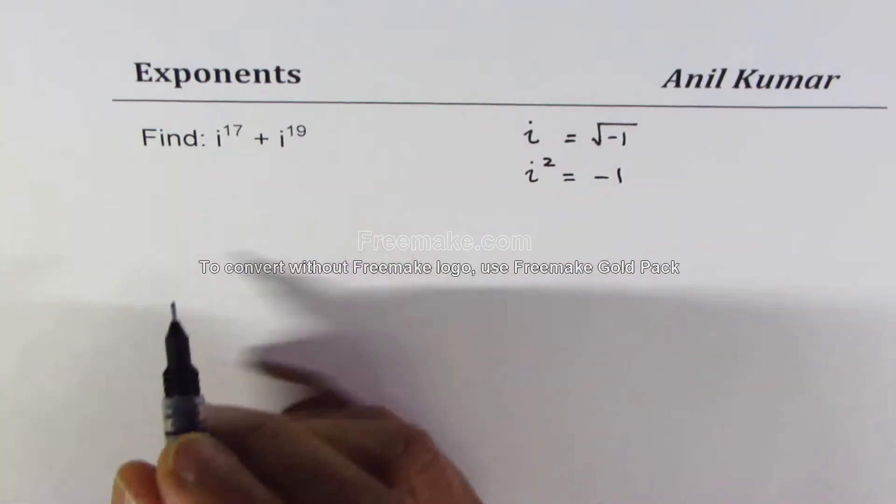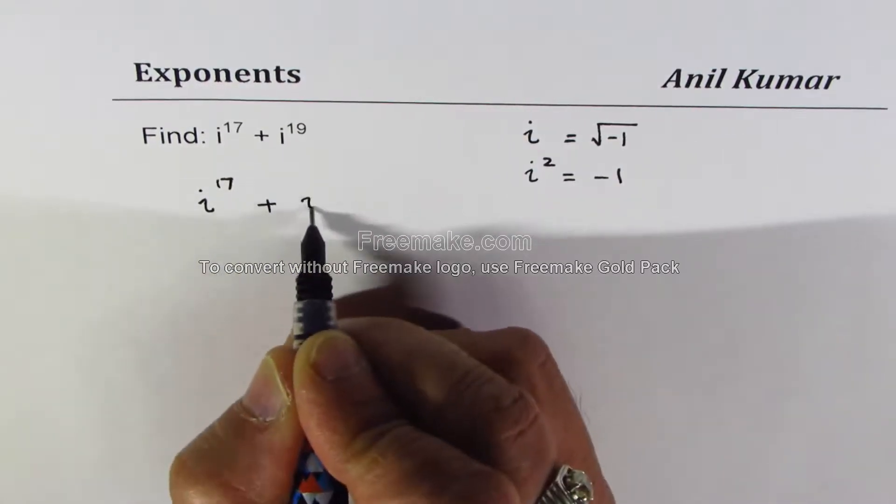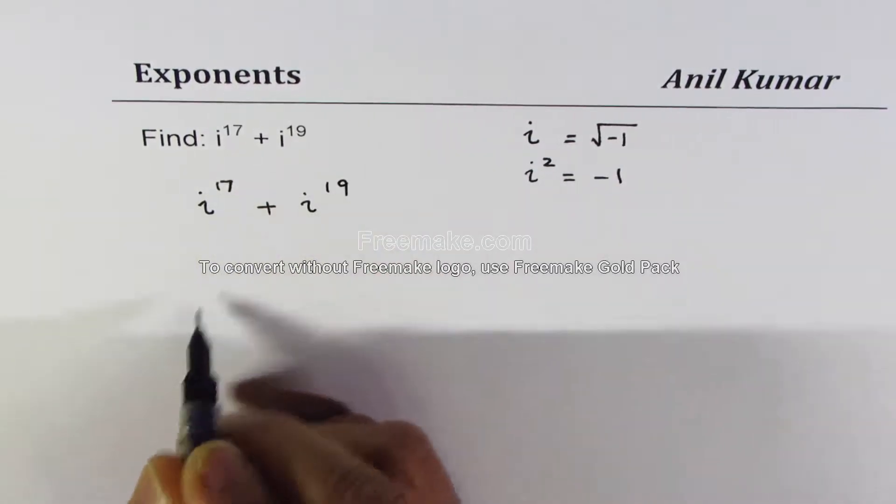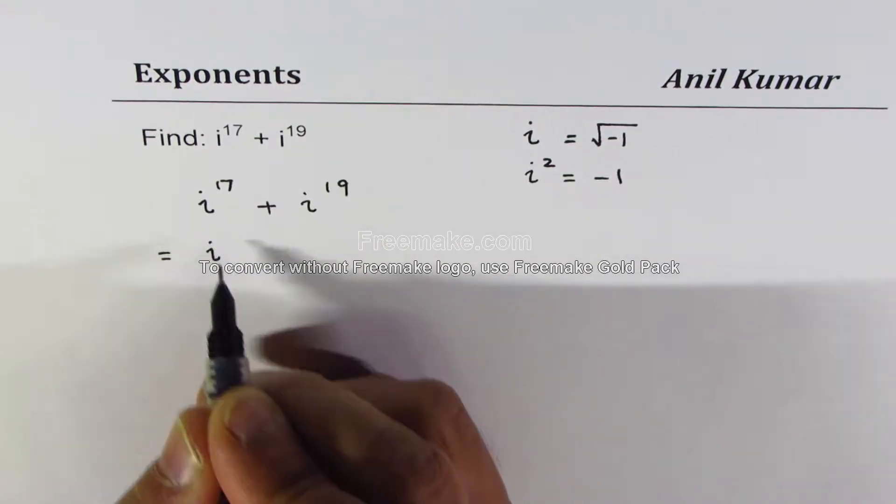We need to evaluate i to the power of 17 plus i to the power of 19. What you can do here is you can take i to the power of 17 common.